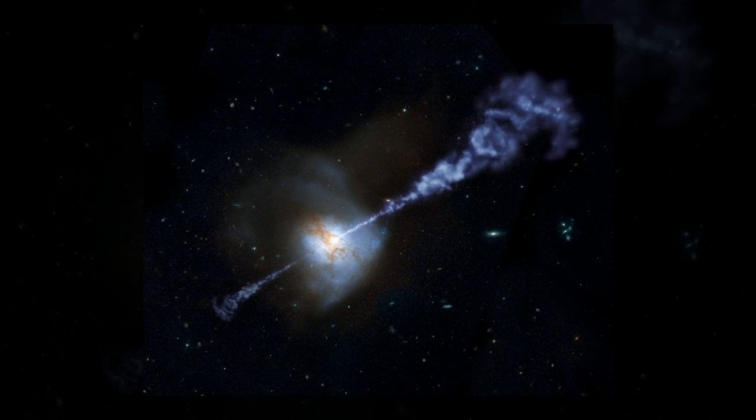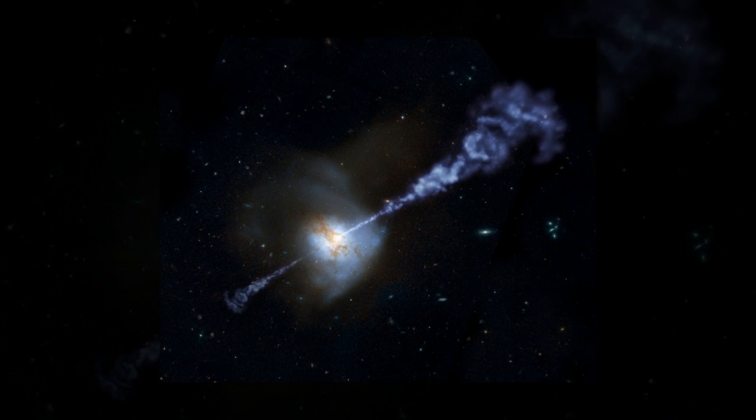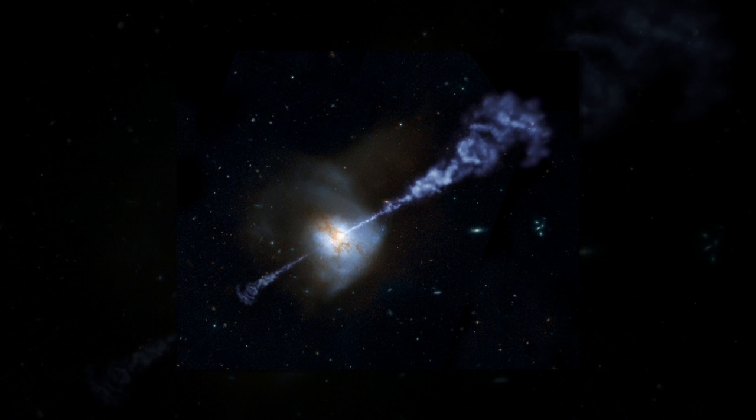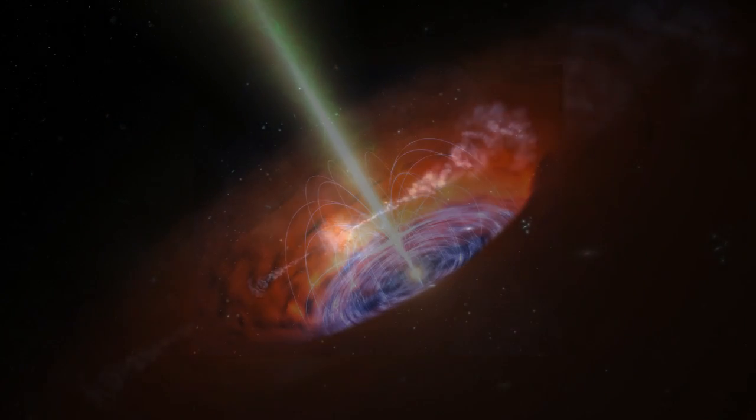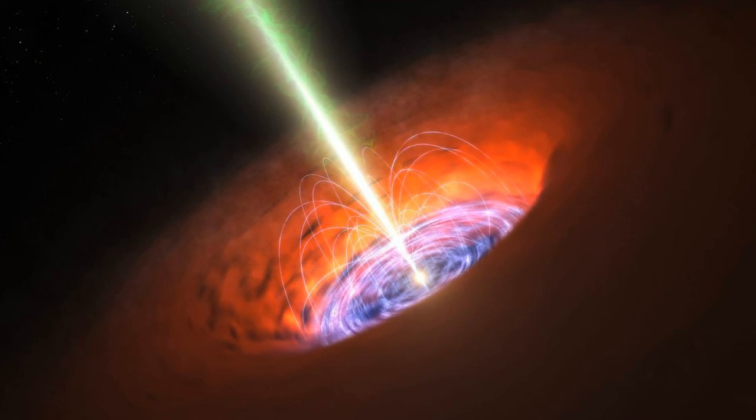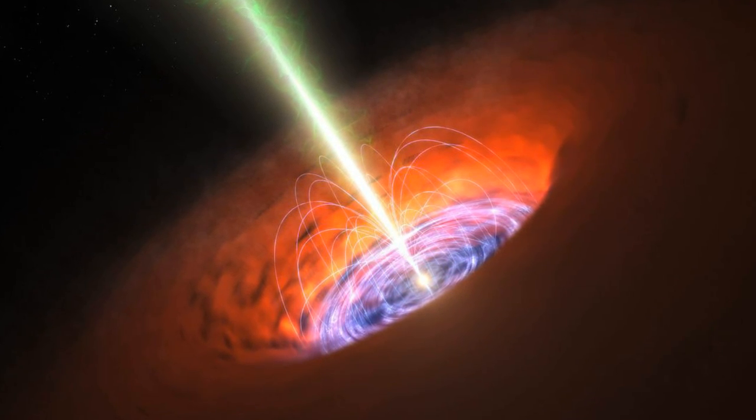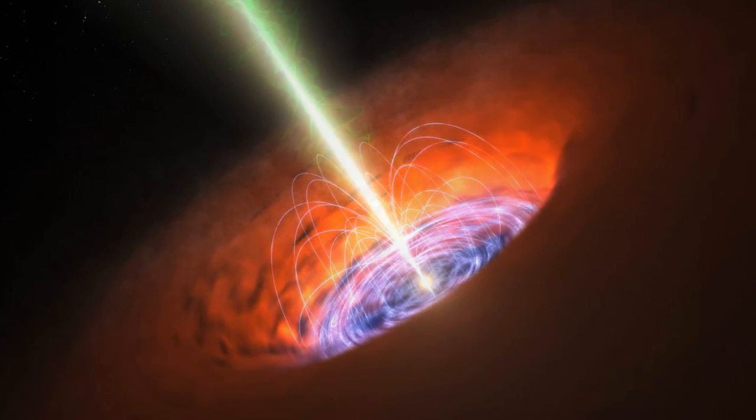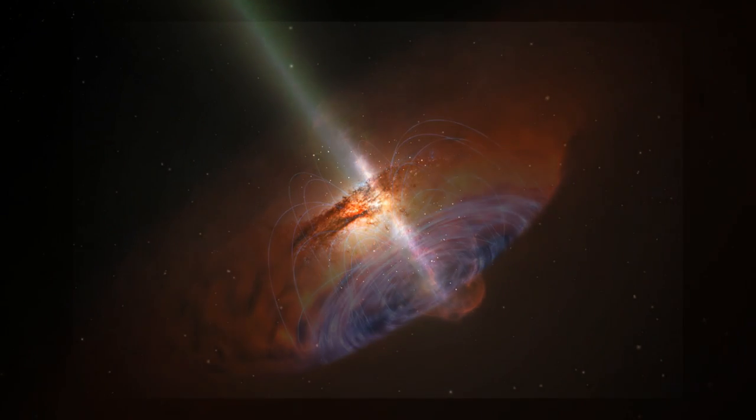Most people think of black holes as giant vacuum cleaners sucking in everything that gets too close. But the supermassive black holes at the centers of galaxies are more like cosmic engines, converting energy from in-falling matter into intense radiation that can outshine the combined light from all surrounding stars.